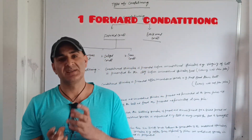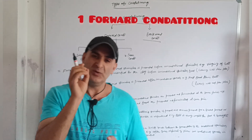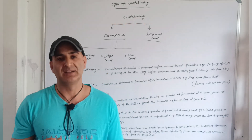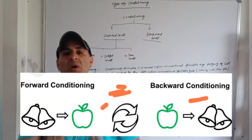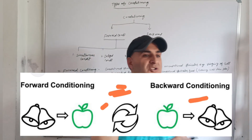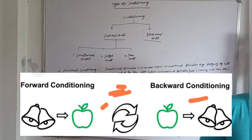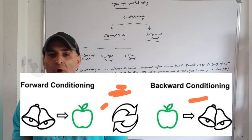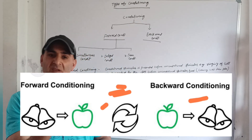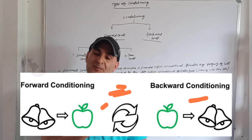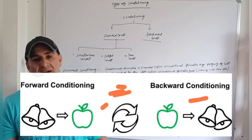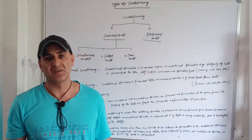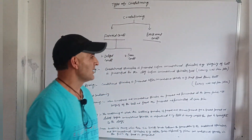Forward conditioning is that type of conditioning in which the Conditioned Stimulus is presented before the Unconditioned Stimulus. In this conditioning, we first provide the Conditioned Stimulus — that is, the ringing of the bell — and after the bell, we provide the Unconditioned Stimulus, which is food. So this type of conditioning is known as forward conditioning.